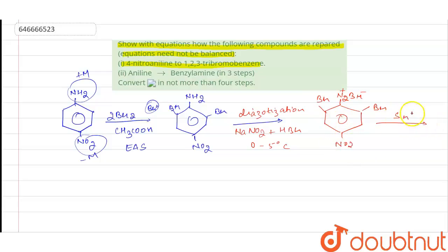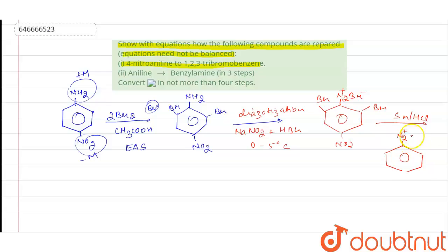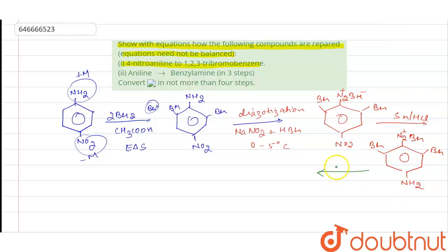Now we do the reduction in presence of Sn/HCl. The NO₂ group at the para position gets reduced to NH₂. The product formed has two Br substituents and the new NH₂ group.